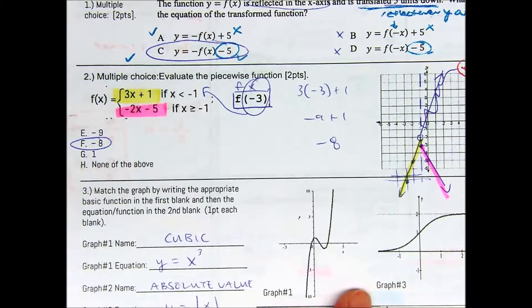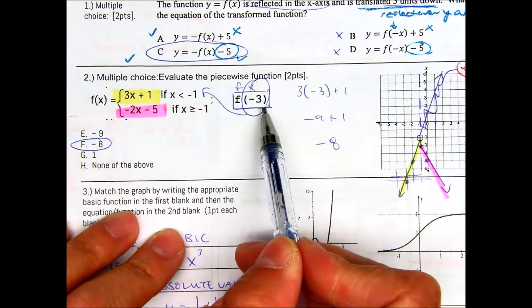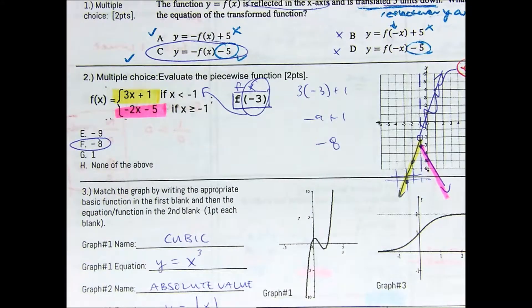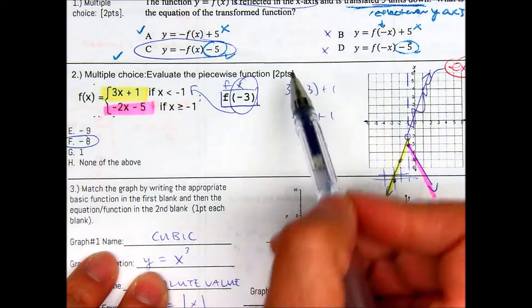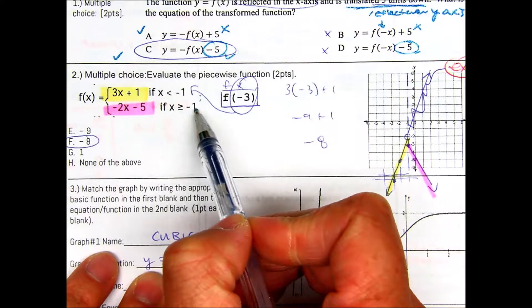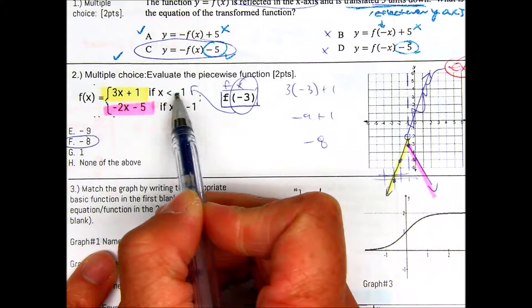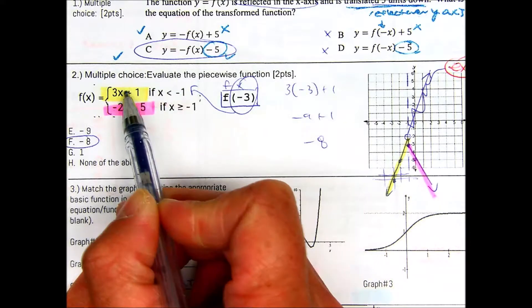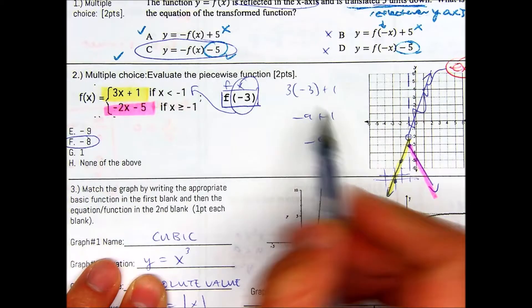Question number two, I mean extra credit. Evaluate the piecewise function. It tells you f of negative three. Remember in function notation, you're going to write an x above it. So the inside of the function is your x value. So x is negative three. The question is, where is negative three? Is negative three bigger than negative one? No, it's not. Is negative three smaller than negative one? That is true. That's the equation you would put into. So you would put in negative three into here. So that would be negative three times three, which is negative nine. Negative nine plus one gives you negative eight. So the correct answer is F.